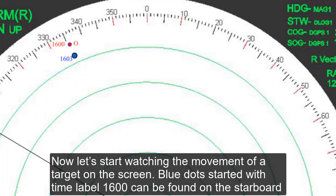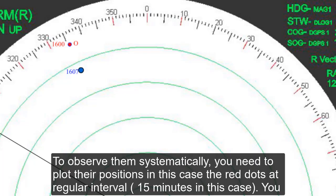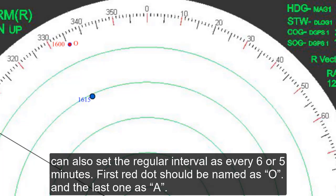Blue dots starting with the time level 1600 can be found on the starboard bow. To observe them systematically, you need to plot their positions—in this case the red dots—at regular intervals, 15 minutes in this case. You can also set the interval at every 6 or 3 minutes.